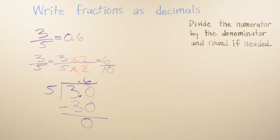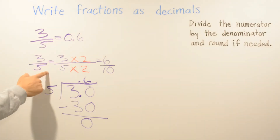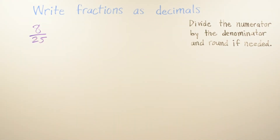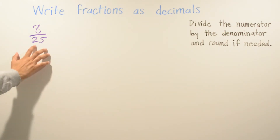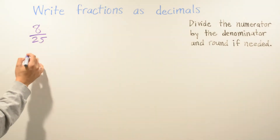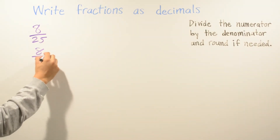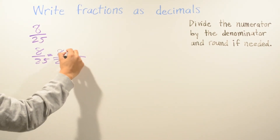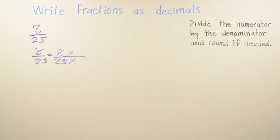You get to choose which method you want to use. As you saw, multiplication gave us 0.6 and division also gave us 0.6. For the next example we have eight over twenty-five. We cannot use base ten because twenty-five is more than ten, so we're going to use base 100.